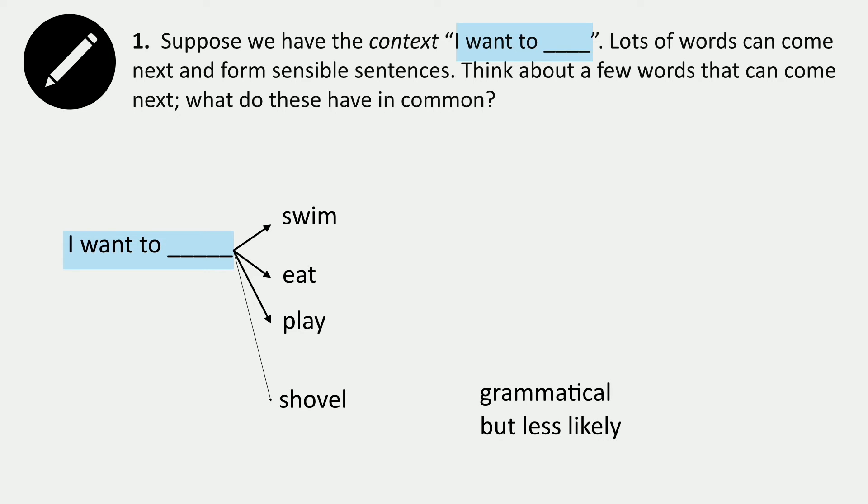So, the interesting thing about this task is it's not just about saying what makes a legal English sentence, but instead it's saying what is actually likely for someone to say next. And that really requires understanding what people want to do, and maybe even what this particular person wants to do. So, this is a case where there's lots of options that can come next.